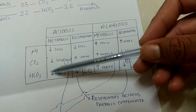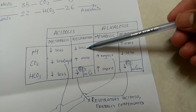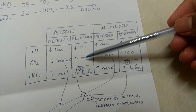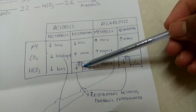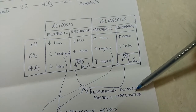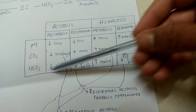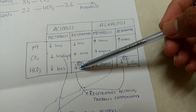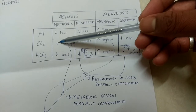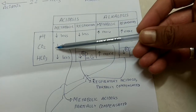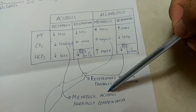If the pH is less and CO2 is more, it is respiratory acidosis. If HCO3 is also affected, it may indicate partial compensation — acidosis is due to CO2 and is compensated by HCO3. If HCO3 is within normal range it is stable; if it is less, it is compensating the acidosis. If HCO3 is less and the pH is low, it is metabolic acidosis, partially compensated.